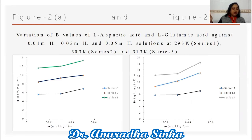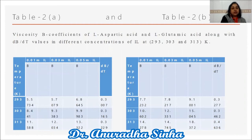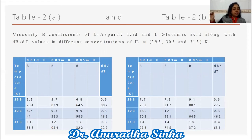The viscosity B coefficients are larger in aqueous ionic liquid solutions, indicating promotion of the liquid structure in the presence of ionic liquid. Positive B values suggest strong solute-solvent interaction that strengthens with increasing co-solvent. The replacement of water molecules by co-solvent molecules from the solute's solvation atmosphere brings the solute and co-solvent closer, increasing B coefficients and accounting for higher solute-solvent interactions. From tables 2A and 2B, the dB/dT values — the first derivative of B with respect to temperature — indicate structure-making behavior. Small positive dB/dT values signify structure-making, that is, the kosmotropic behavior of the amino acids in aqueous ionic liquid solutions.